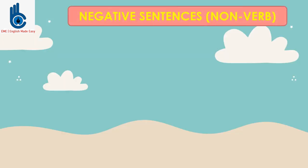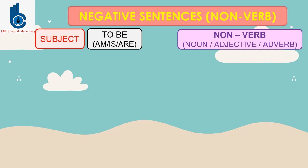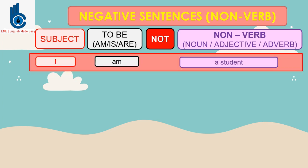Now, to make negative sentences. To make a positive sentence, we use this pattern. And to make a negative sentence is very simple by putting the word 'not' after to be. Cukup meletakkan kata not setelah to be. For example: I am a student. So, to make it negative, you just put the word not.